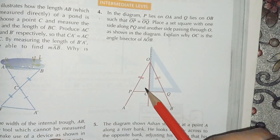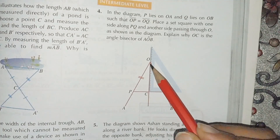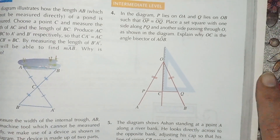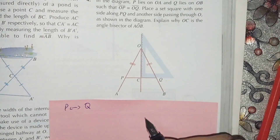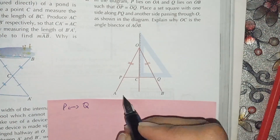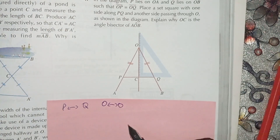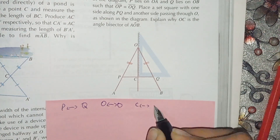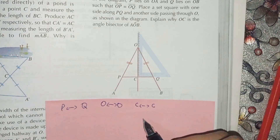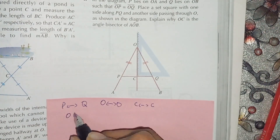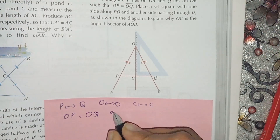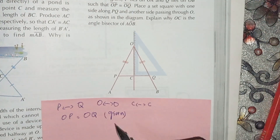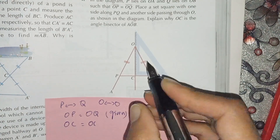We have to prove that OC is the angle bisector of AOB. In the two triangles, P is equivalent to Q, O is common in both triangles, and C is common in both triangles. OP is equal to OQ — this is given to us — and OC is equal to OC as it is common.